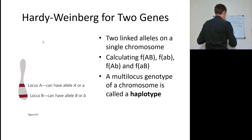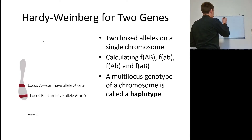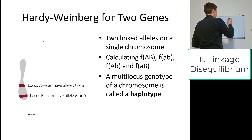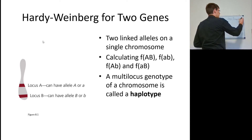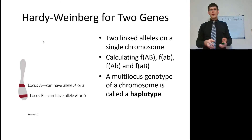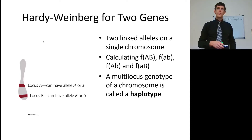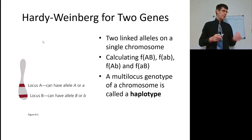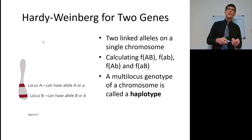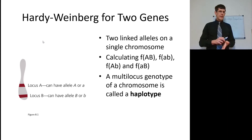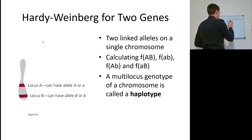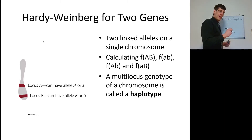Moving on to linkage disequilibrium. Linkage disequilibrium is a measurement of how often genes are going to travel together based on recombination. We're looking at Hardy-Weinberg for two genes, where two linked alleles are on a single chromosome and sort together — they do not sort independently. Instead of calculating the frequency of A, little a, B, and little b separately, we calculate the frequency of the four possible combinations of those two loci. These are called haplotypes — the multi-locus genotype on a single chromosome.